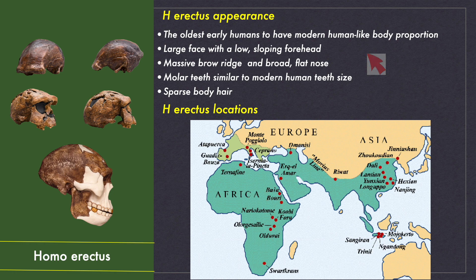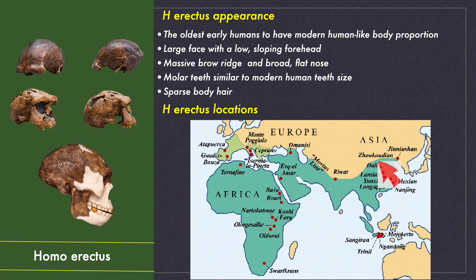They still had some remnant ape features like massive brow ridges and a flat broad nose, but had small dentition. They ate large amounts of meat supplemented with plant food, and there was no significant size difference between males and females. Because Homo erectus migrated from Africa, there are three subspecies found in three different geographical regions: Africa, China and Java. Based on their place of living, these three subspecies are named Homo erectus ergaster (the African Homo erectus), Homo erectus pekinensis (the Peking man), and Homo erectus javanicus (the Java man).